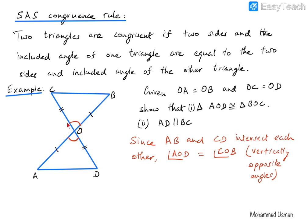We have the first side equal, the second side equal, and the included angle between the two sides equal for both triangles. Therefore, by the SAS rule — side-angle-side rule — triangle AOD is congruent to triangle BOC. That is proved.